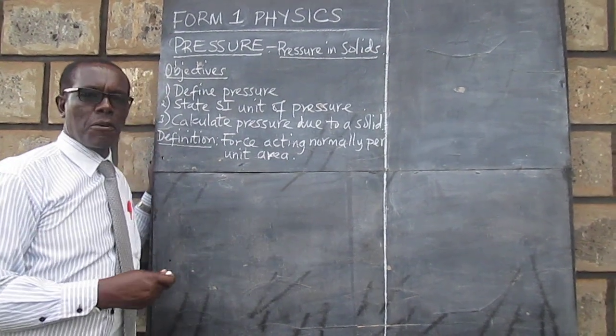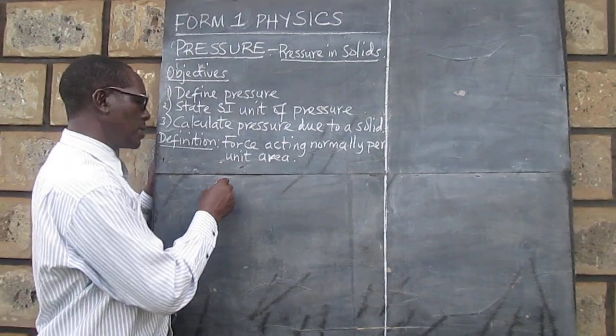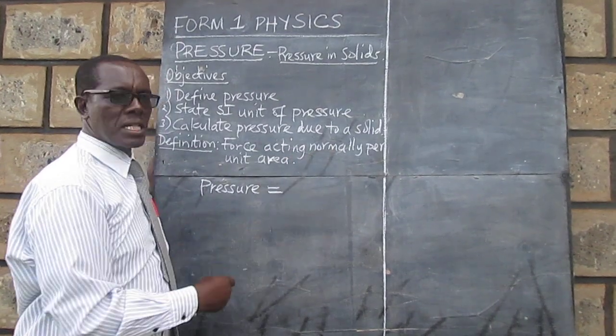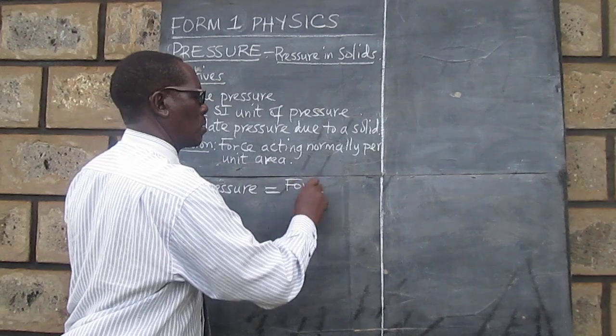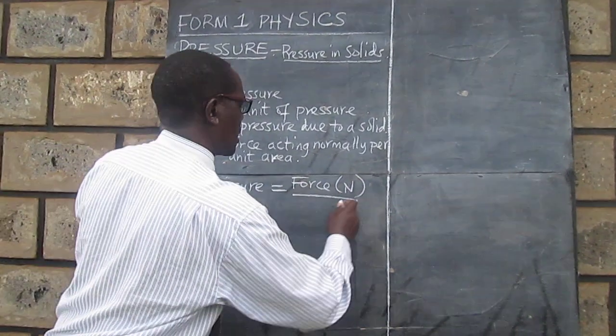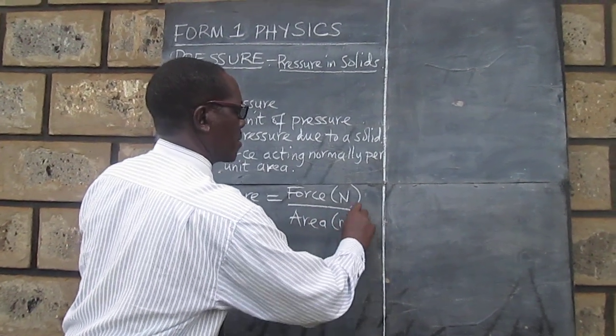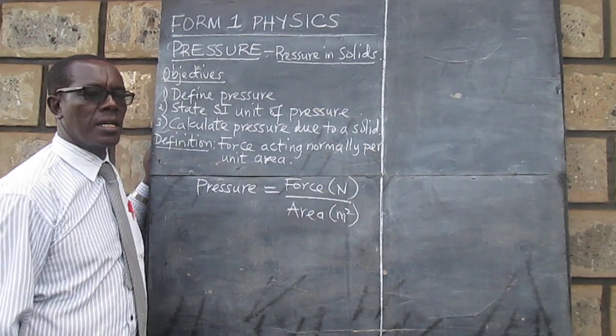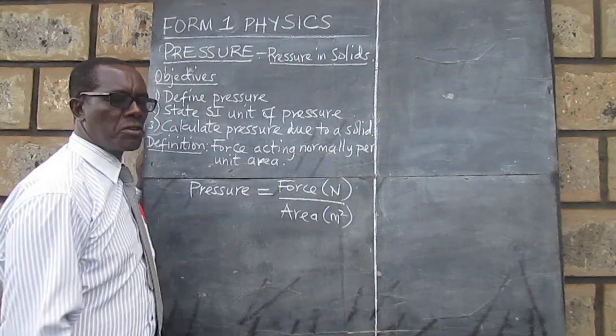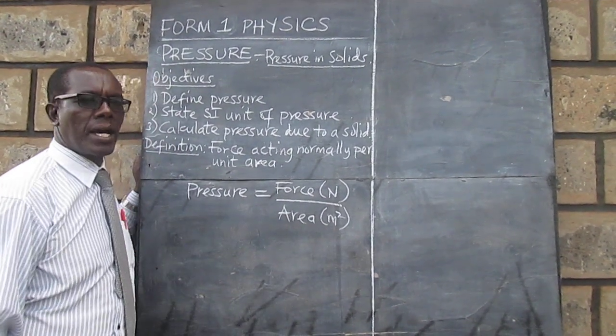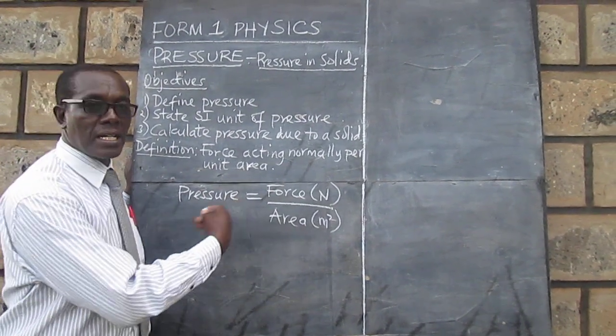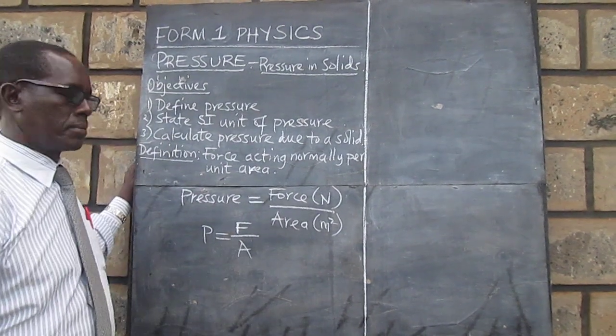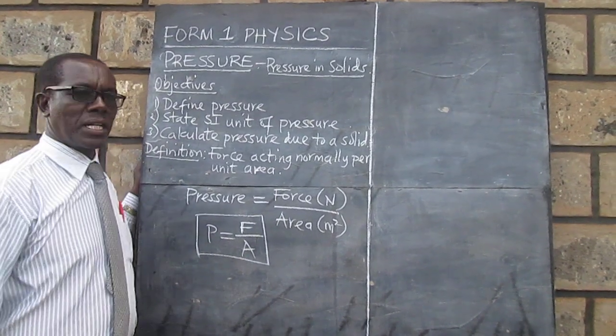This can also be written in the form of a mathematical formula. Therefore we can write pressure equal to force acting normally per unit area. We write force in Newtons over area in square meters. So the formula for calculating pressure would be pressure equals force divided by area. This can also be written in symbols so that we have P equals F divided by A.